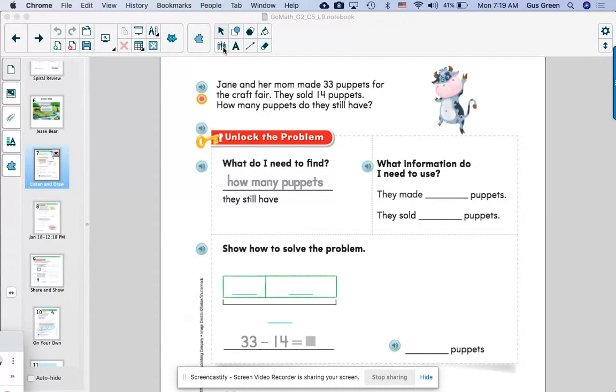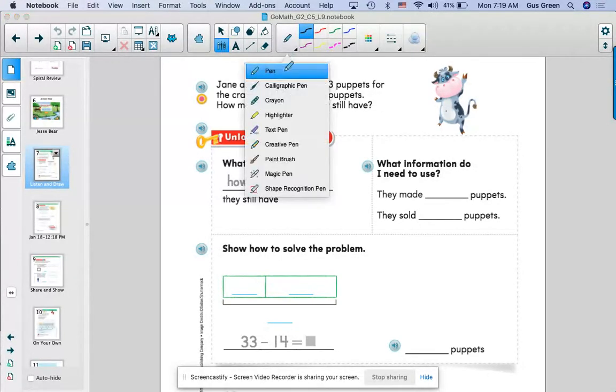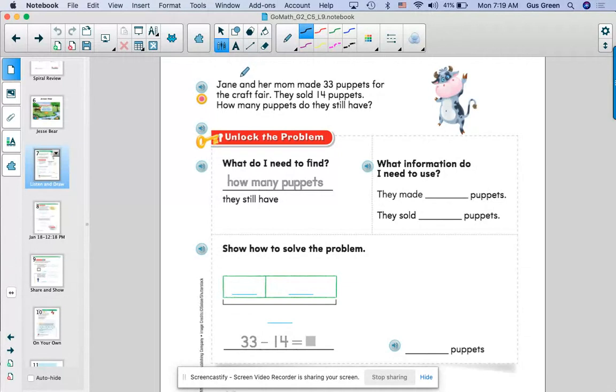All right, let's get ready to work and unlock a math problem. Make sure I got my pencil out, and let's start by reading it carefully. Jane and her mom made 33 puppets for the craft fair. They sold 14 puppets. How many puppets do they still have?